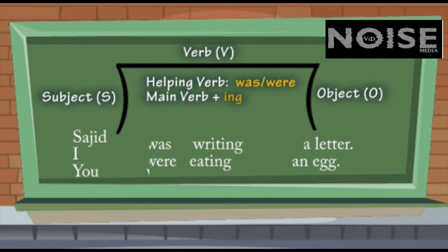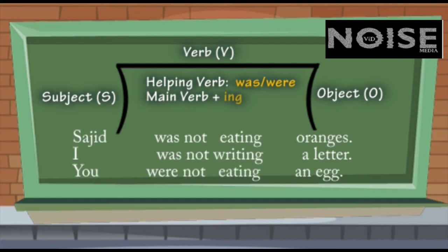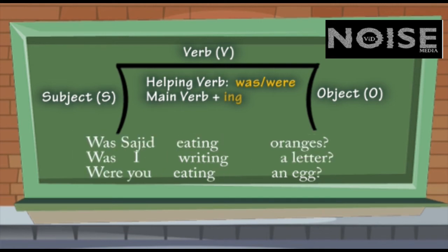Negative, I think even easier. Sajid was not eating oranges. I was not writing a letter. You were not eating an egg. Now, the question form, similarly quite easy. Simply drag was over to the beginning. For example, Was I eating oranges? Was I writing a letter? Were you eating an egg? And remember the tone. When you're saying something, your tone has to be high. And in writing, especially in examination, you must add a question mark.